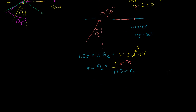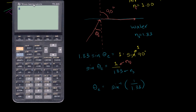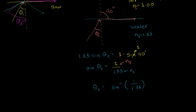So just to keep solving it, we can take the inverse sine of both sides and get our critical angle. Our critical angle is going to be the inverse sine of 1 over 1.33. Let's get the TI-85 out. We want to find the inverse sine of 1 divided by 1.33. And we get 48.8 degrees. So our critical angle is 48.8 degrees.